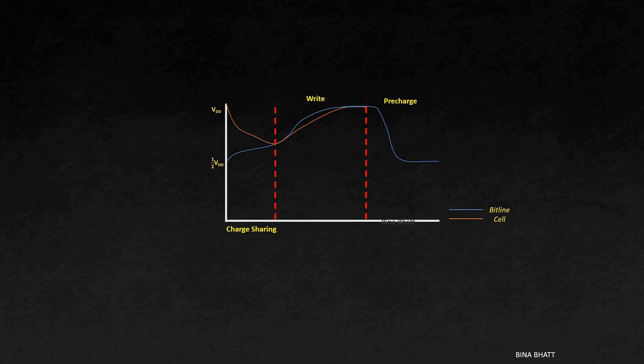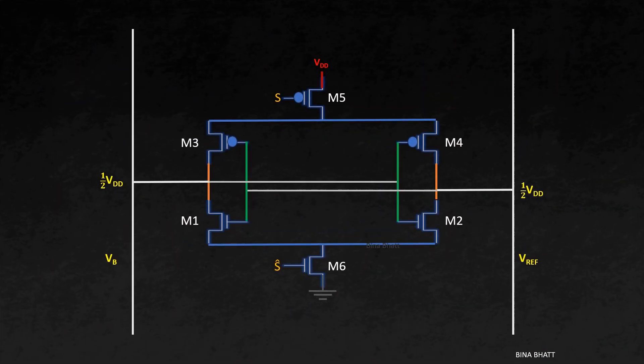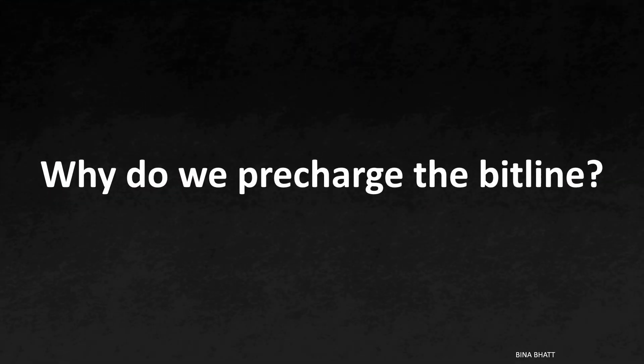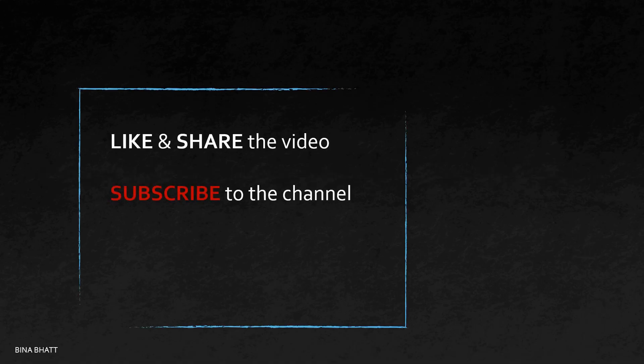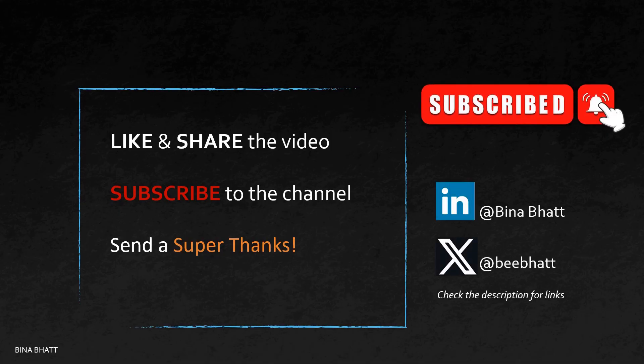Now before I end this video, I'd like to ask you two questions. First, have you seen the circuit before? If yes, where? And the second question is, why do we pre-charge the bit line? Think about it. Leave your answers in the comments section. I'll pin the correct answer. Hope you found the video useful. If you did, then please drop a like, share this video and consider supporting the channel through Super Thanks. Don't forget to comment your answers. Also, you can leave one line or one word to sum up how you felt about this video. And I'll see you in the next one.